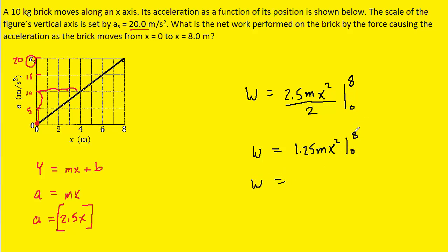Now in order to evaluate this, we plug in the upper limit first. So we're going to have 1.25 times the mass times 8 squared. And then we subtract what we get by plugging in the lower limit. So that's going to be 1.25m times 0 squared. Now of course this term will cancel out. And then we can plug in the mass, which was given to us as 10 kilograms. And when we work this out, we can see that the work is 800 joules. And this becomes the correct answer to the question.